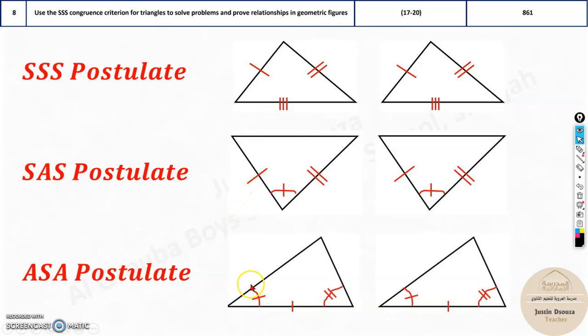And lastly, we have angle, side, and angle. If there is an angle, then a side, then an angle, then again they are congruent. So these are the three postulates.